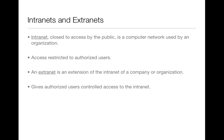There are also intranets and extranets, not to be confused with the internet. Unlike the internet, an intranet is closed to access by the public. An intranet is a computer network used by an organization — it works like the internet, but its access is restricted to authorized users. A company might keep its employee directory and code of ethics on the intranet. An extranet is an extension of the intranet of a company or organization, giving authorized users controlled access. This semi-private network allows more than one company to access the same information and collaborate.